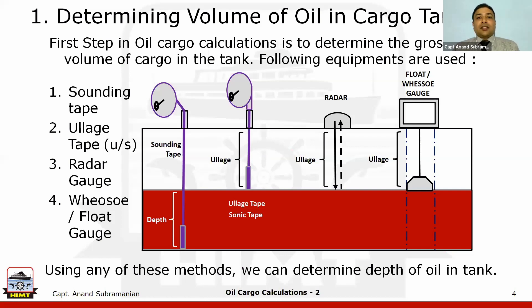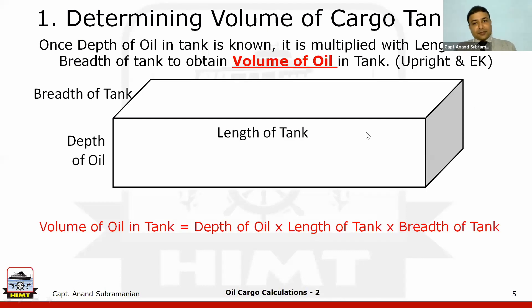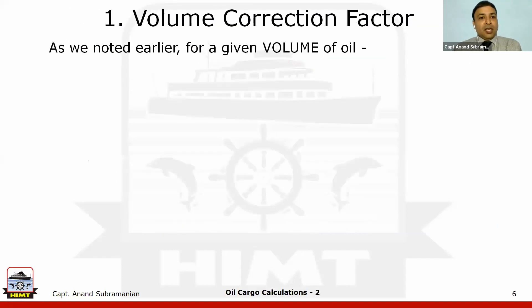We'll do a quick recap of what we did last week. There are various ways of determining the volume of oil in cargo tanks: we can use a sounding tape, a ullage tape, a radar gauge, or a float gauge. Depending on the equipment on board, we use one or more of these to find the volume. Once we get the ullage, we subtract it from the height of the tank to get the depth of the oil, then multiply by length and breadth to get volume — but this is only for an upright, even-keel condition.